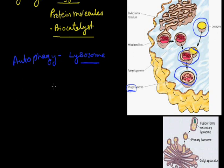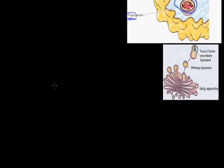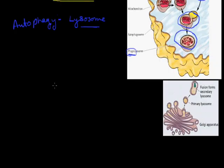How are lysosomes formed in the cell? Lysosomes are formed with the help of the endoplasmic reticulum and the Golgi body. The Golgi body forms primary lysosomes, and these primary lysosomes convert into secondary lysosomes. So lysosomes can be primary, secondary, and tertiary in nature.